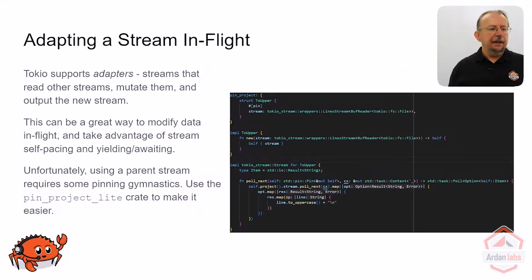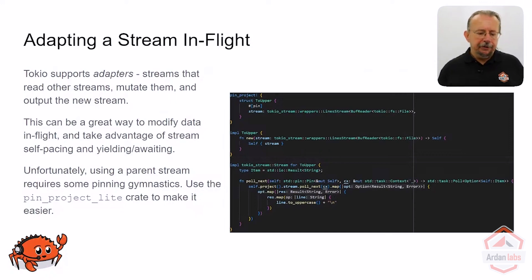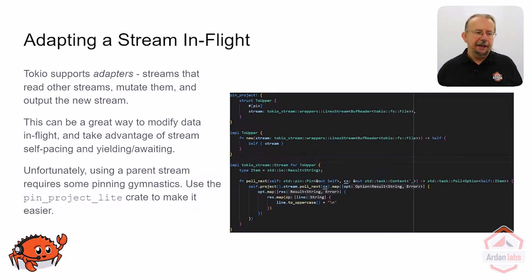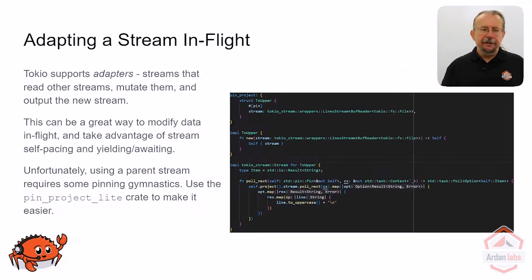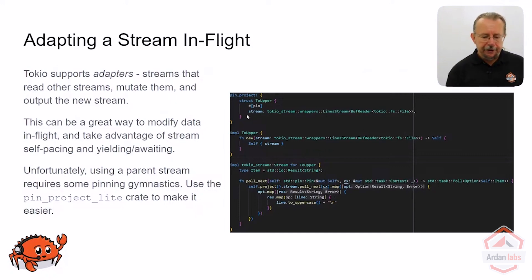I gave you a pre-made example of how to write one of these yourself. What this one does: I created a stream called toUpper. It accepts a stream coming in of lines from a file and just makes them uppercase. You'll notice there's a lot of boilerplate here — I had to use a crate called pin-project-lite. It replaces a lot of really gnarly, nasty code that you'd have to look up every time, with a simpler syntax where you can wrap the thing you're creating — the stream — in a PinProject attribute at the top.